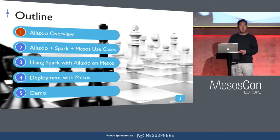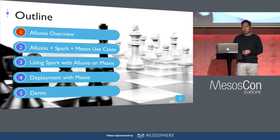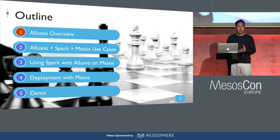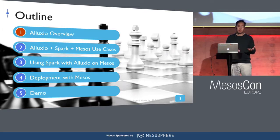Here's a brief overview of what I'll be talking about today. I'll first go into an introduction and overview of Alluxio, then go into some use cases that users are using with Alluxio, Spark, and Mesos together. I'll also describe how you can use Spark and Alluxio together, how this gets deployed in Mesos, and then go through a demo of this on DC/OS.